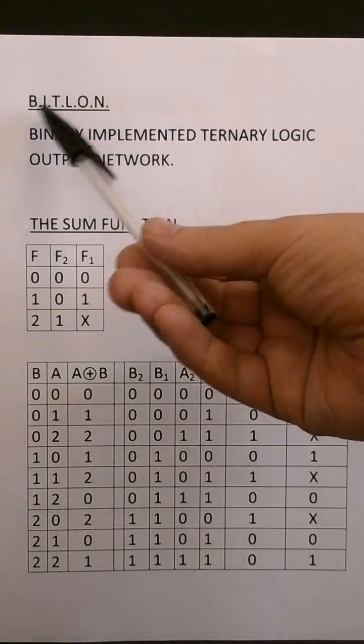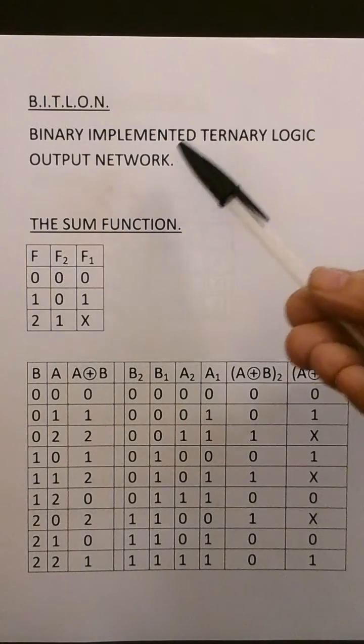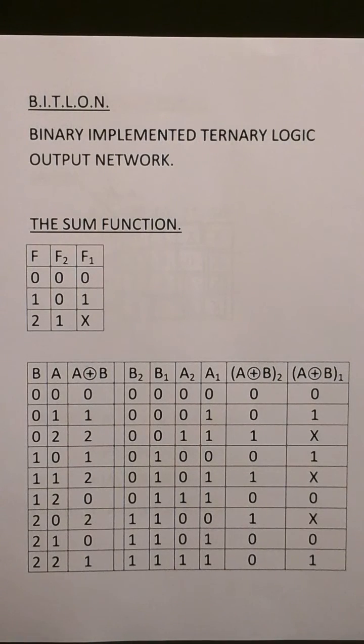So here we have the definition of BITLON, binary implemented ternary logic output network. Basically, you take a ternary signal, convert it to binary, process it in binary and convert it back to ternary again.